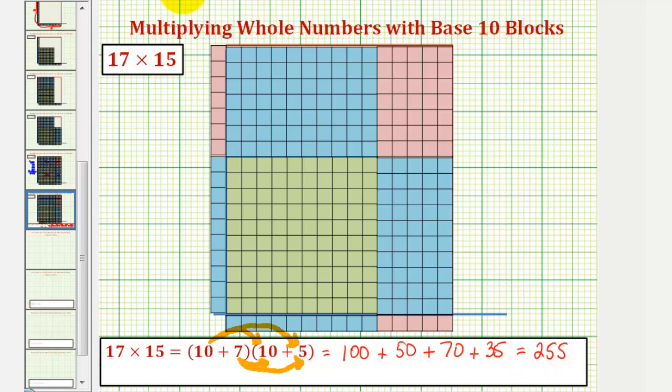notice how the partial product of 100 is equal to the area of our 100 block. The partial product of 50 is the area of our 5, 10 blocks here. 70 is the area of our 7, 10 blocks here. And then finally 35 is the area of our 35, 1 blocks here.